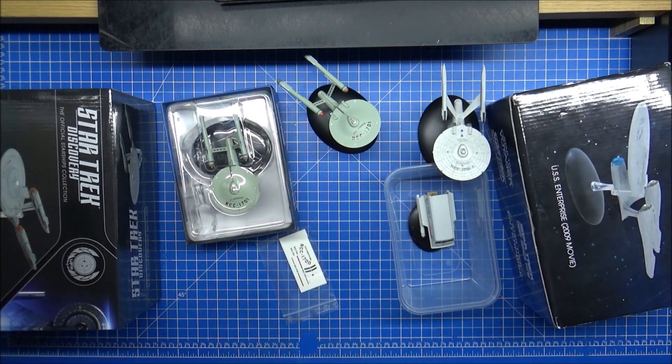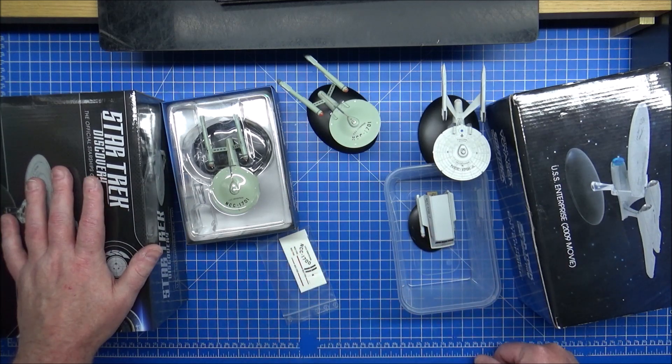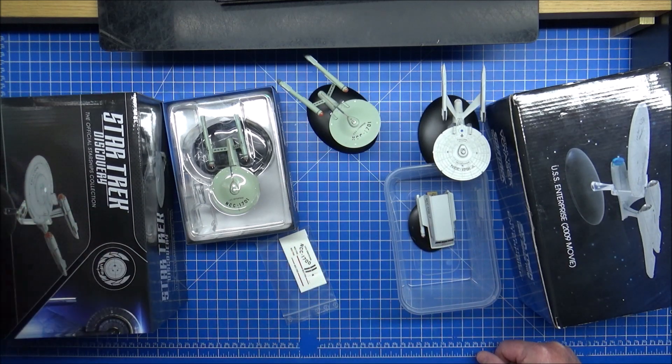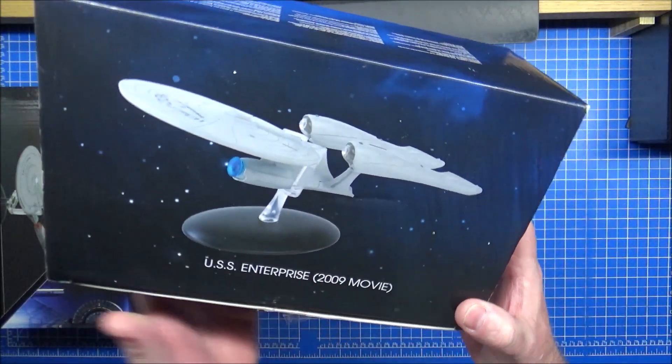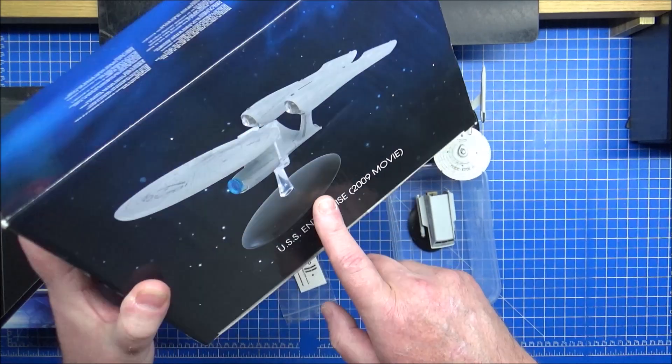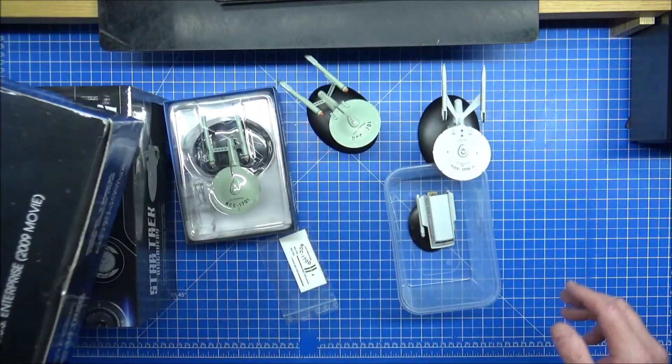So what I decided is the Discovery Enterprise stays as is. It's going to be 1701, don't care. The J.J. Abrams version 2009 movie, that is also going to be a 1701. That had to stay as it is.